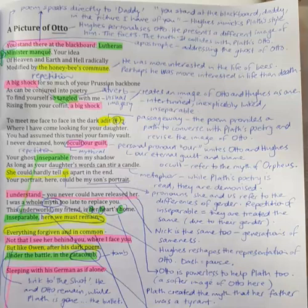A Picture of Otto by Ted Hughes. You stand there at the blackboard, Lutheran Minister Monke, your idea of heaven and earth and hell radically modified by the honeybee's commune. A big shock for so much of your Prussian backbone, as can be conjured into poetry, to find yourself so tangled with me, rising from your coffin.